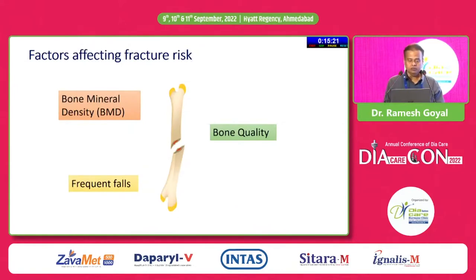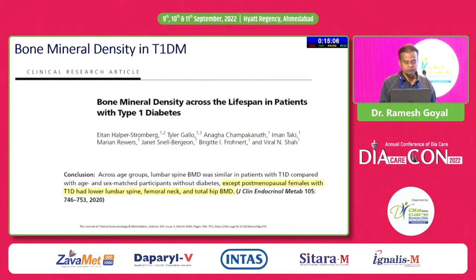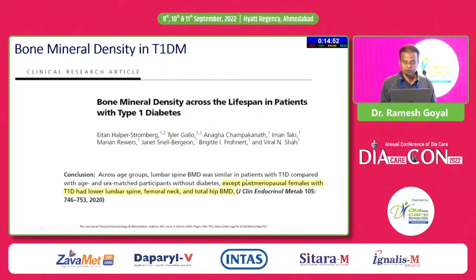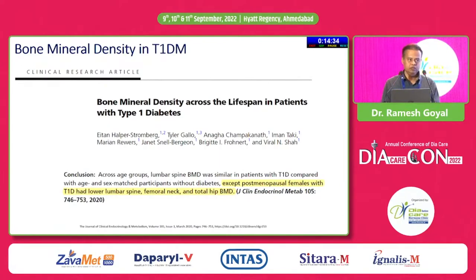Factors affecting fracture risk include bone quality affected by bone mineral density depletion and risk of frequent falls seen in the diabetic population. A study on BMD across the lifespan in type 1 diabetes showed that lumbar spine BMD was similar to age- and sex-matched non-diabetic participants, except post-menopausal females with type 1 diabetes had lower lumbar spine, femoral neck, and total hip BMD.